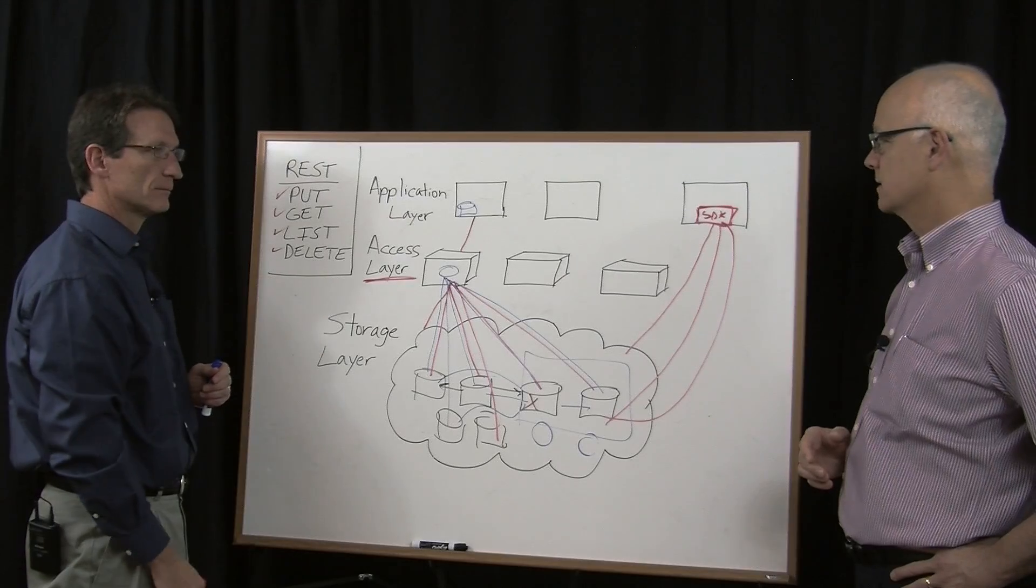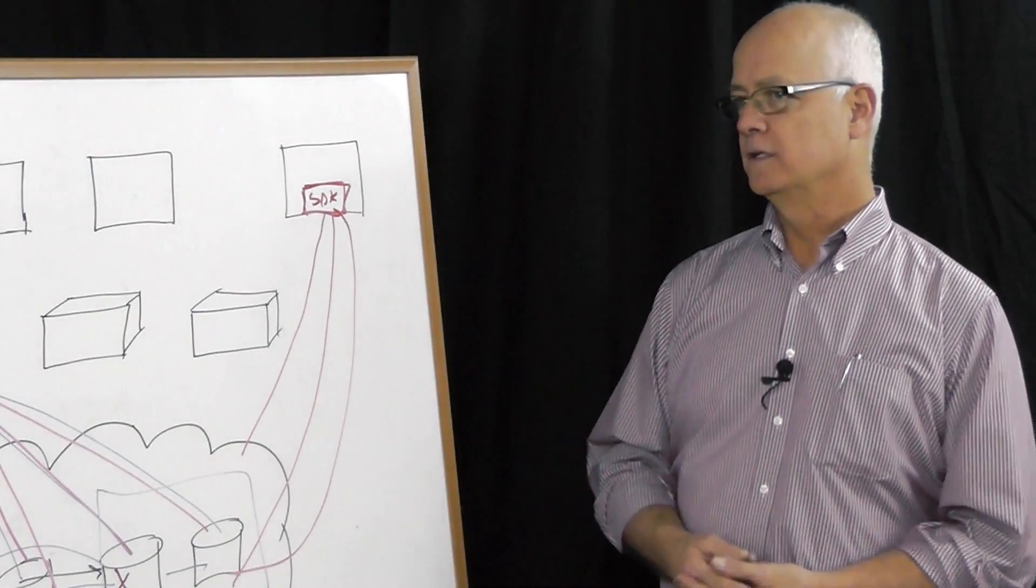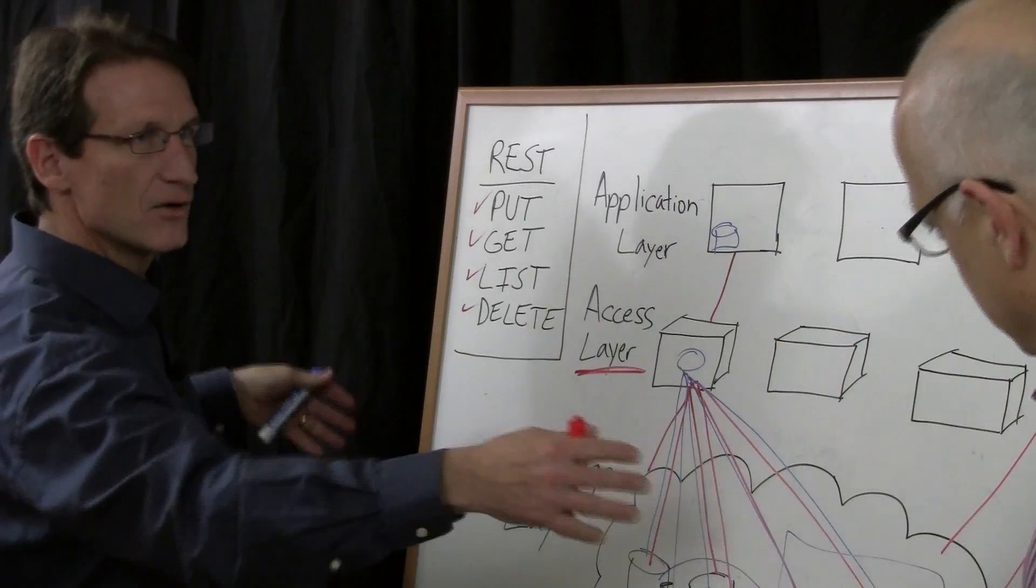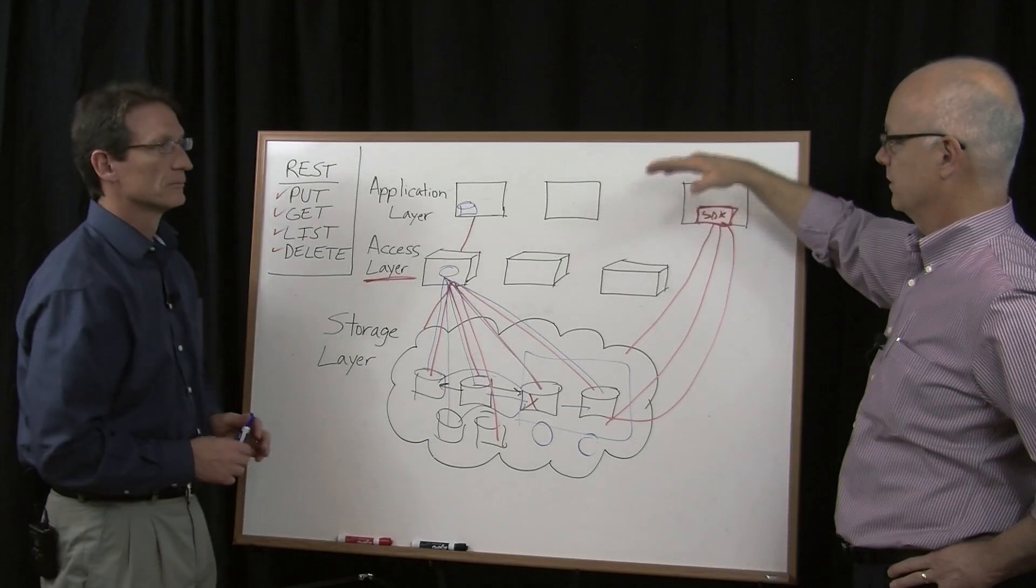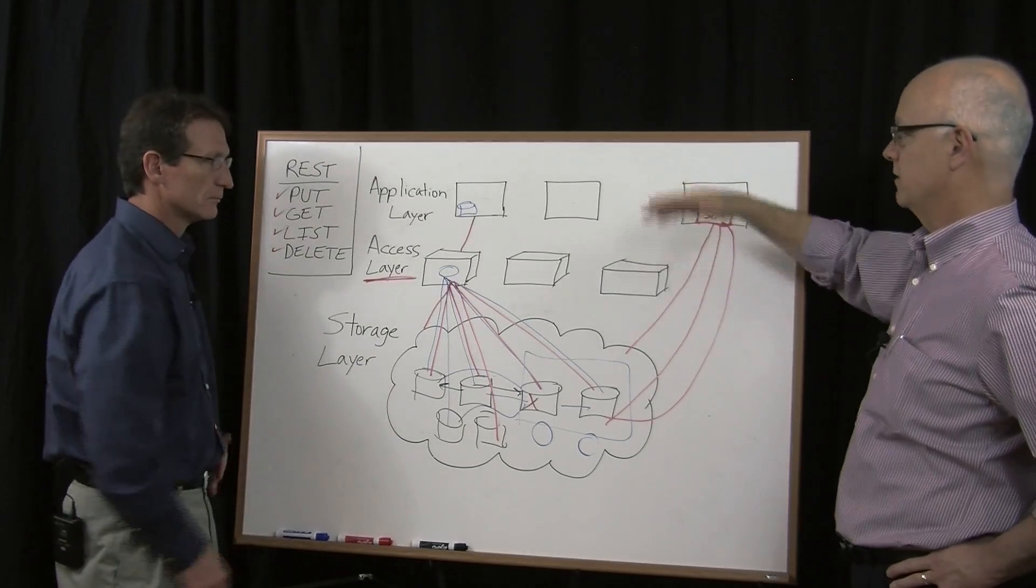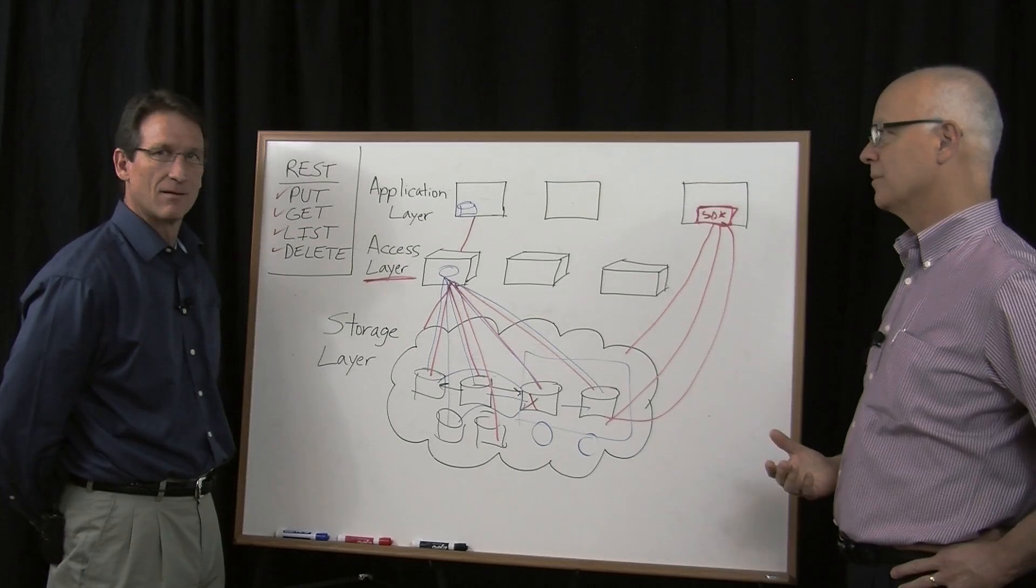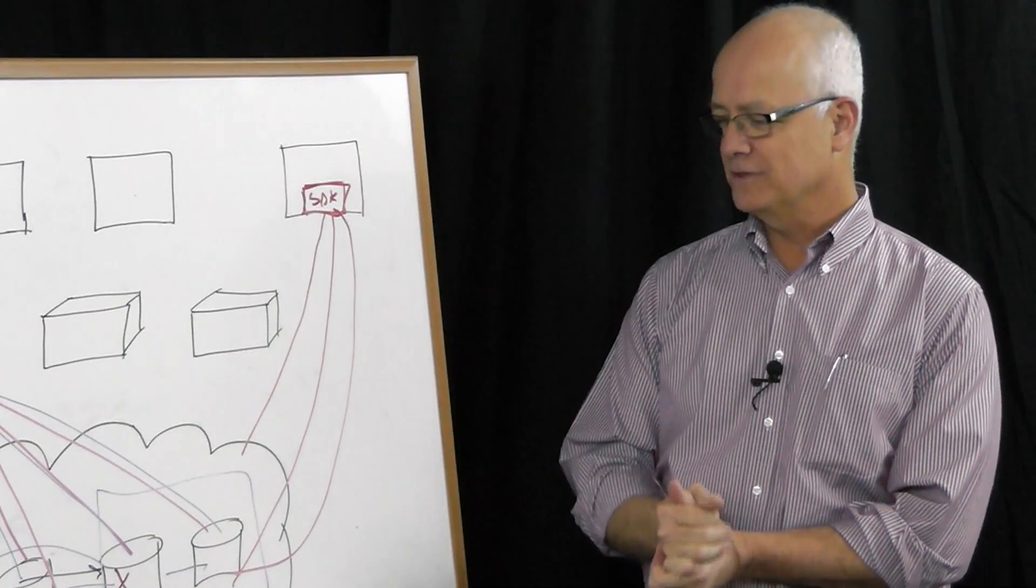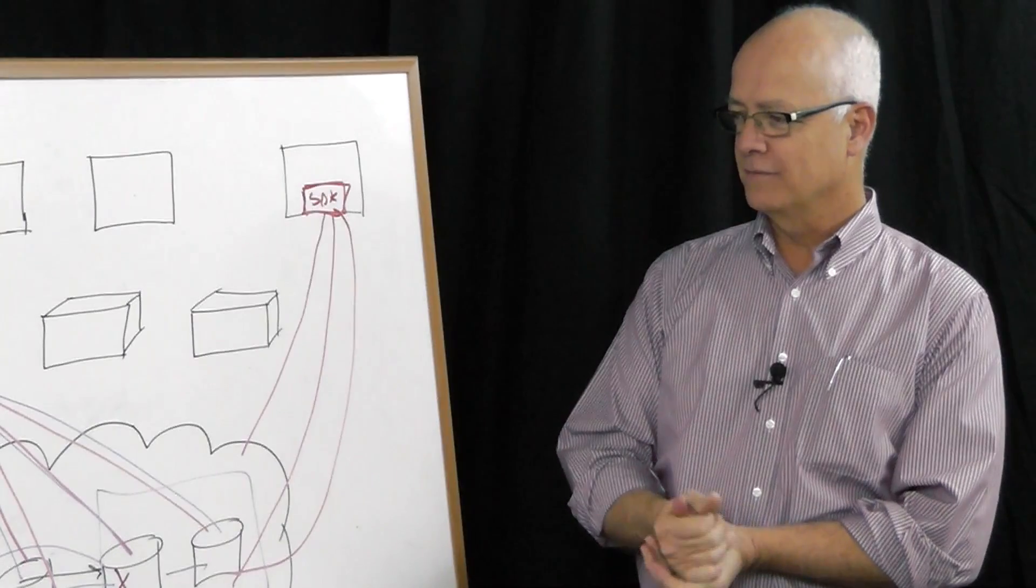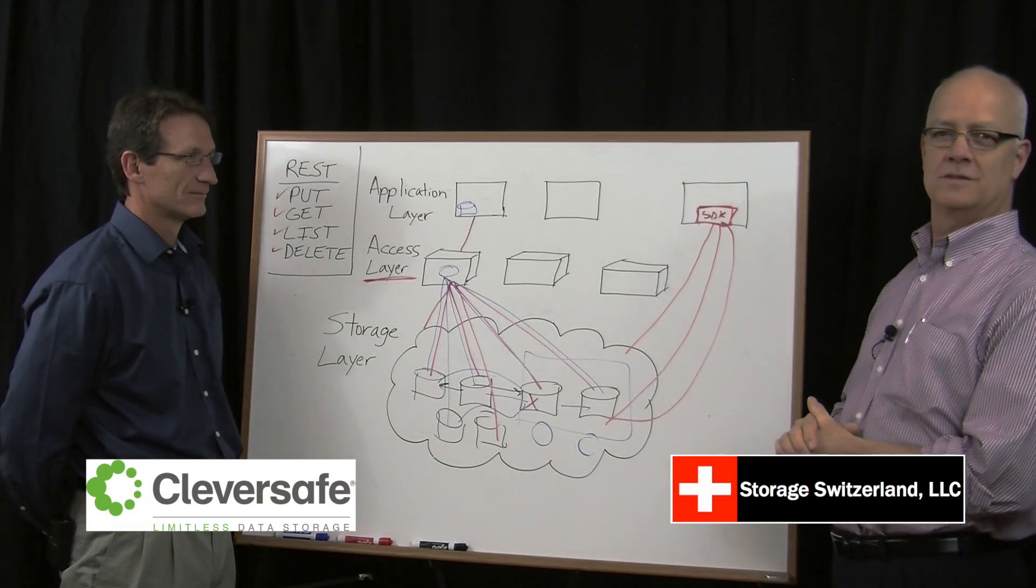Amazing stuff. So this is how folks like Shutterfly can do 70 petabytes. This is how they're getting to 70, going to 100, going to 200, and they still have to maintain the kind of performance that website visitors require. They don't care if you've got 70 petabytes or 70 gigabytes. Great stuff. Thanks for the information, Russ. Thanks for joining us today. This is Eric Slack from Storage Switzerland. Thanks for tuning in.